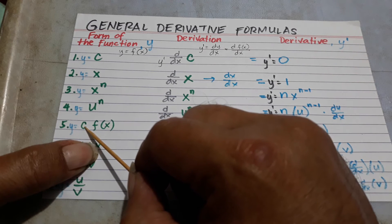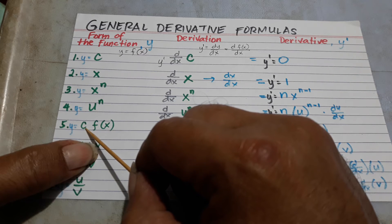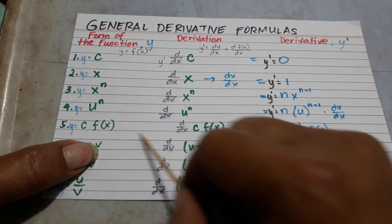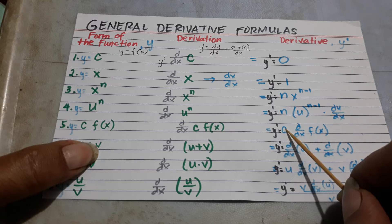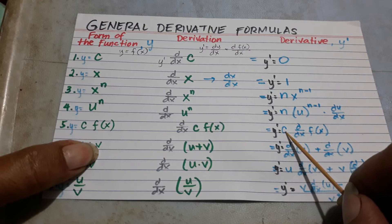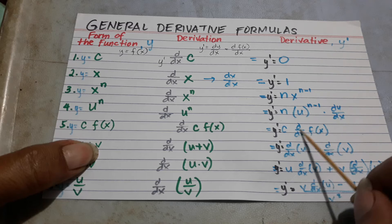So, if C here is a constant, it's a number, times the function, so the derivative of that is you're going to place C outside, then derive the function.